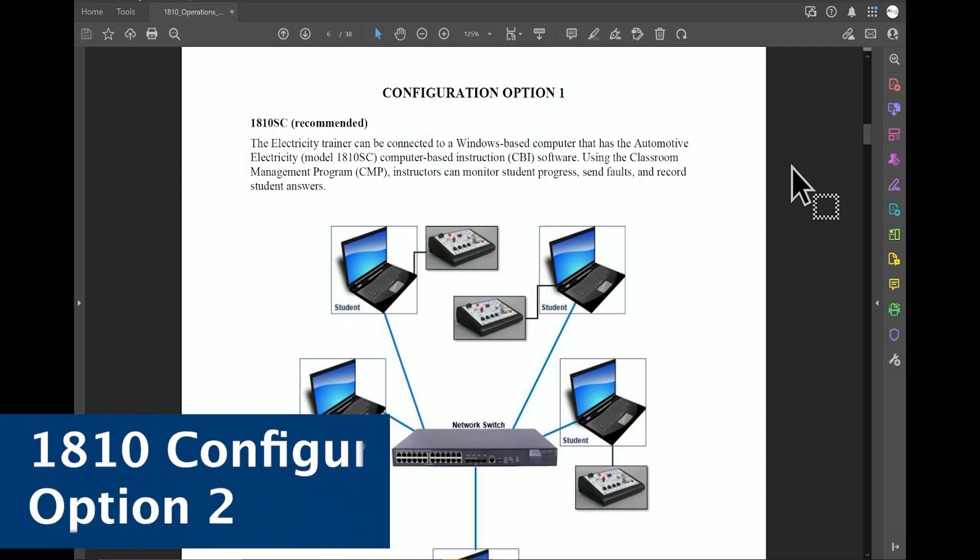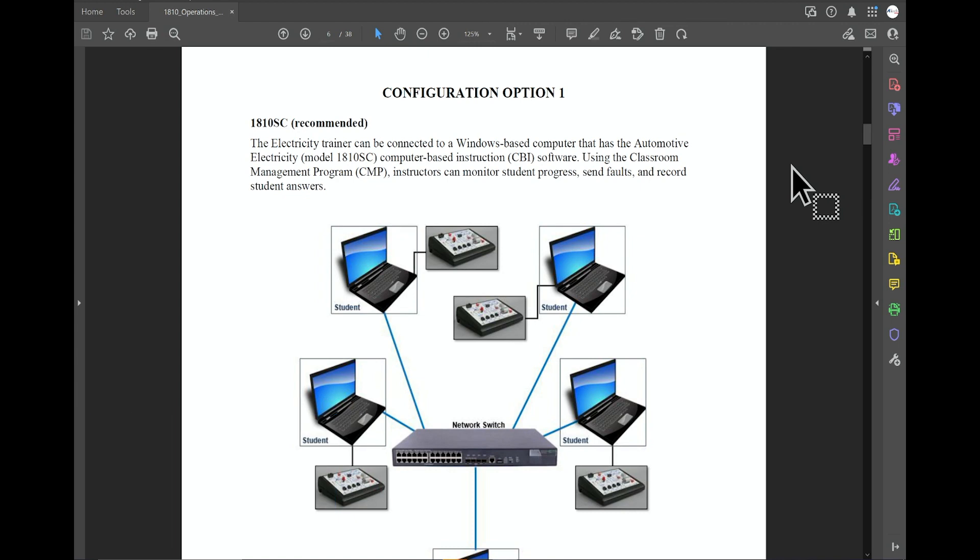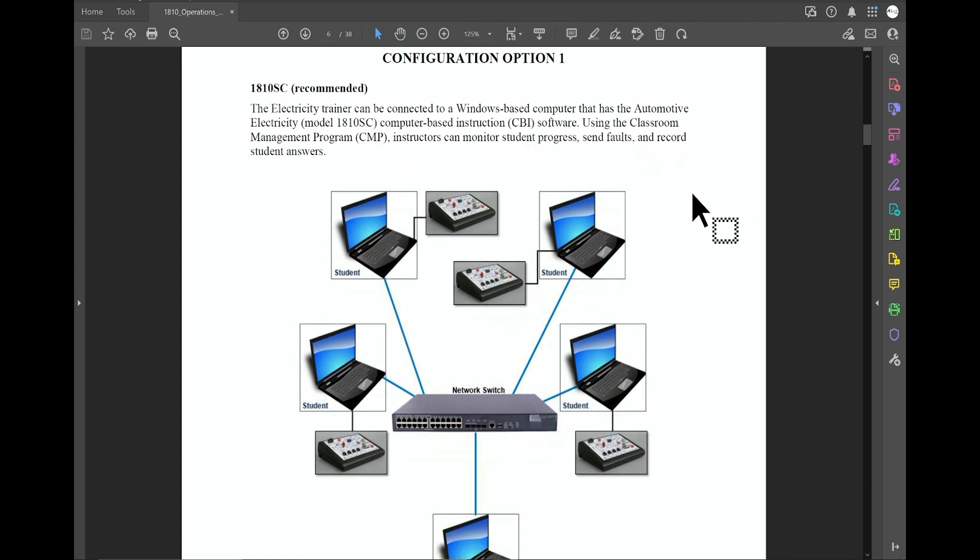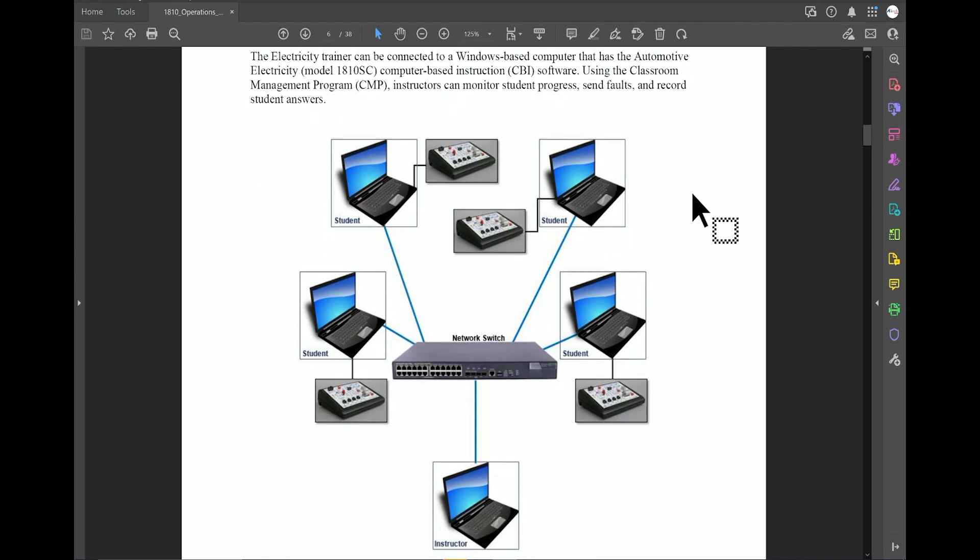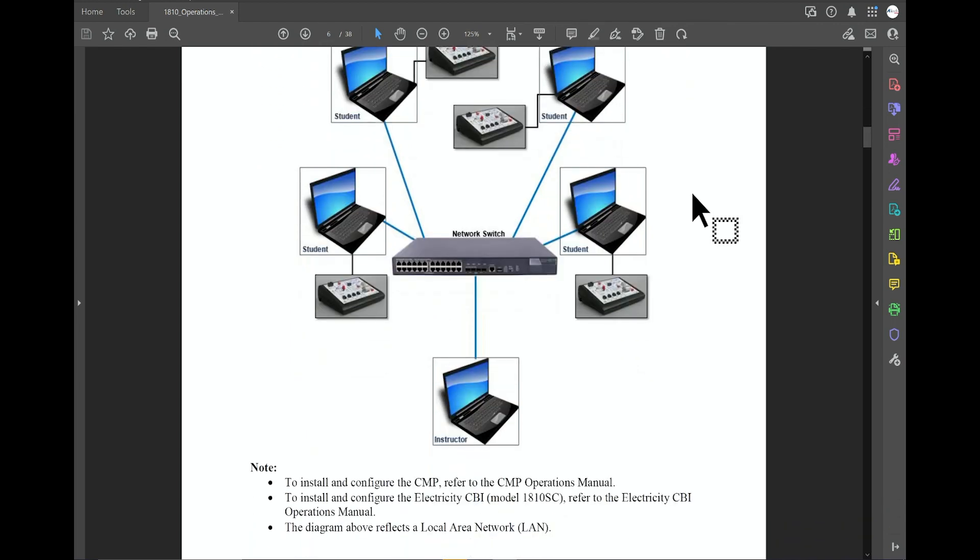You're going to want to go ahead and open your operations manual up to pages six and seven. On page six you're going to find information about configuration option one, setting up your 1810 utilizing laptops and the classroom management program. You want to check out the previous video in this series for information about option one.